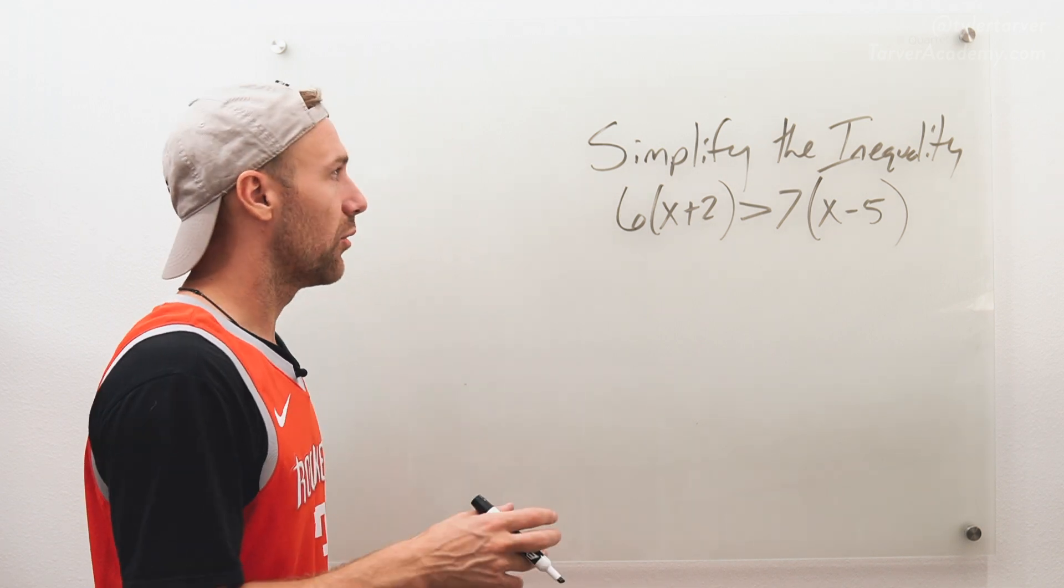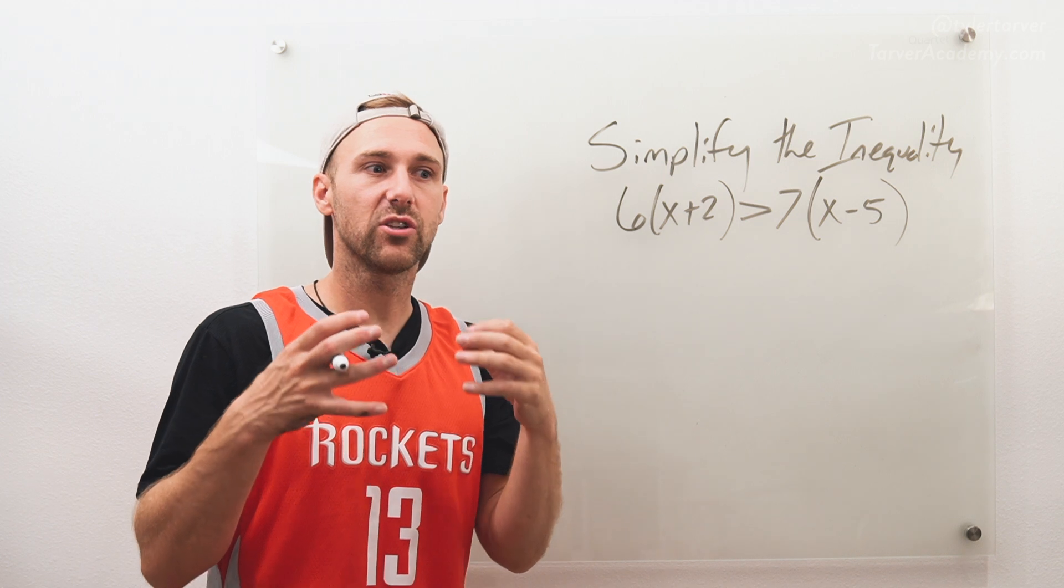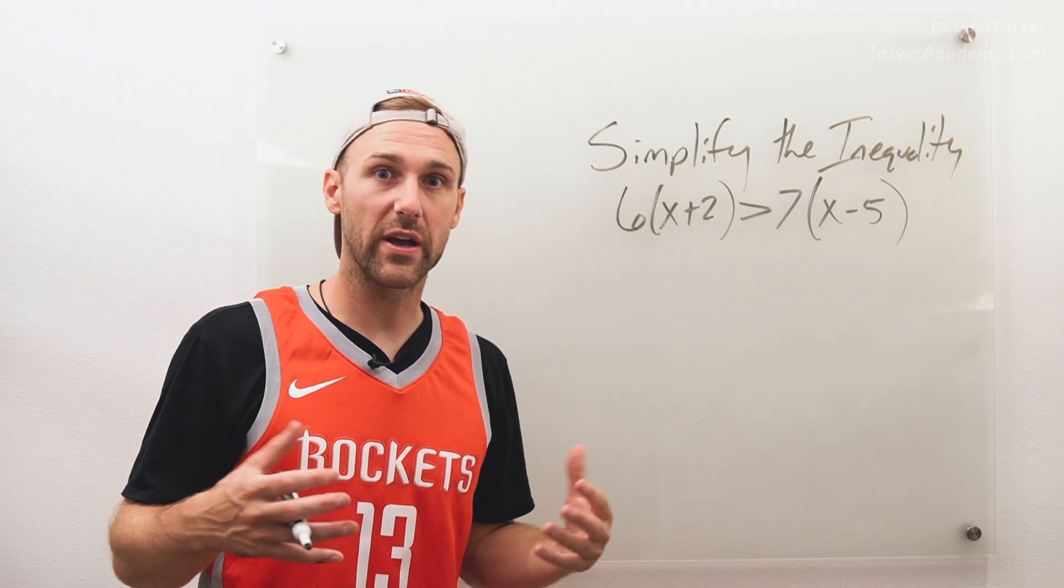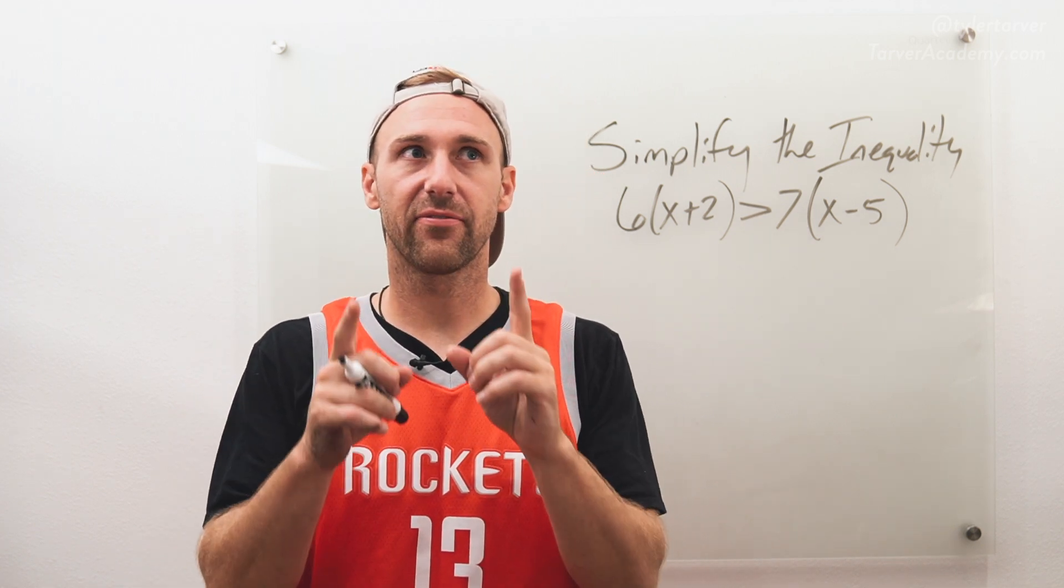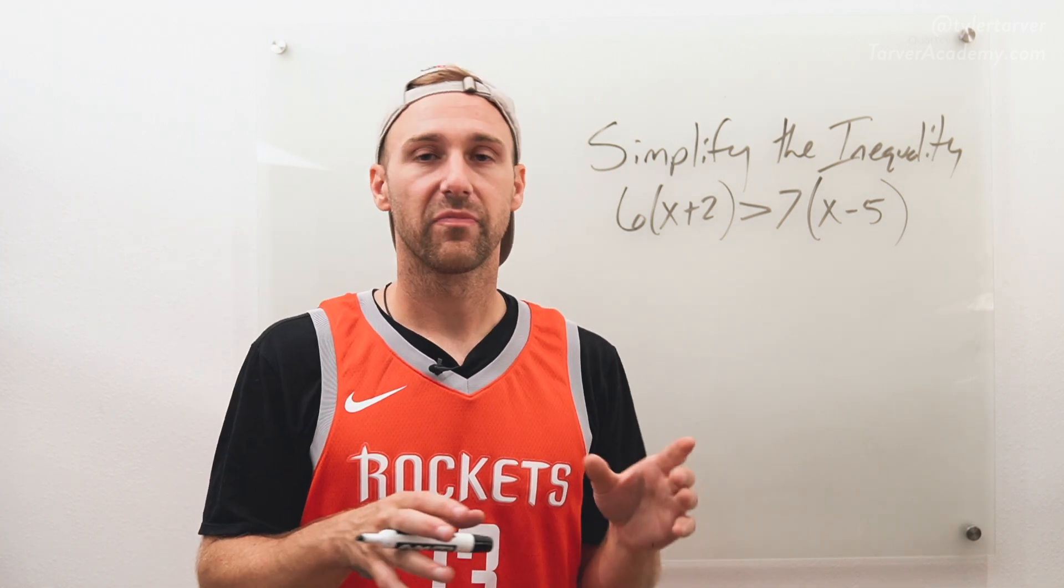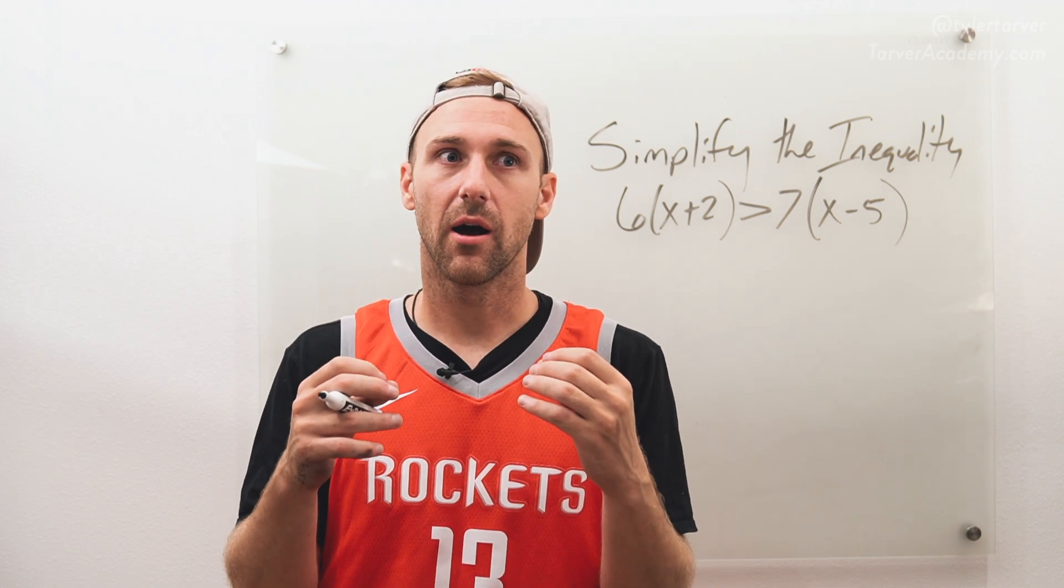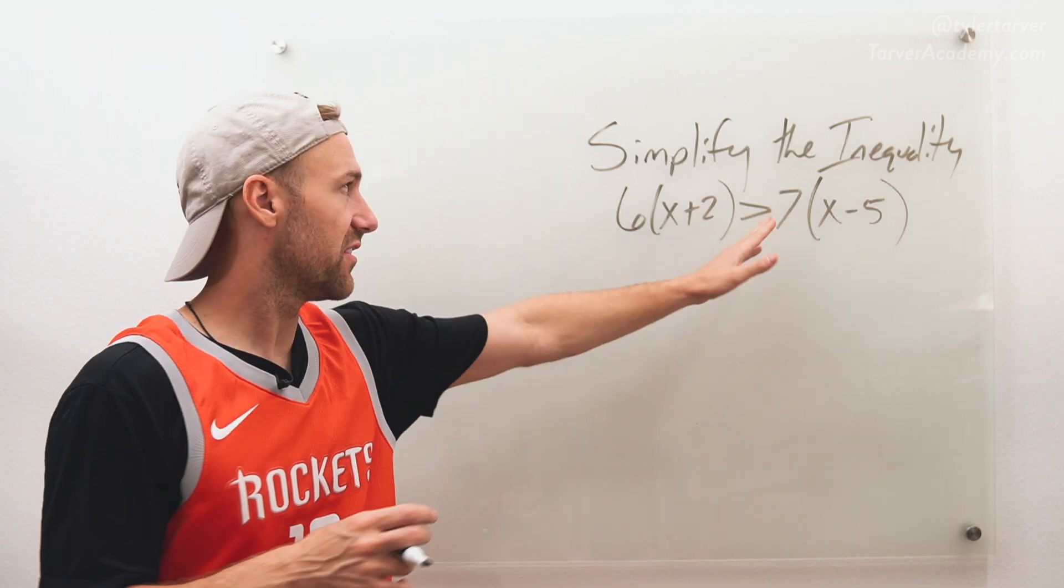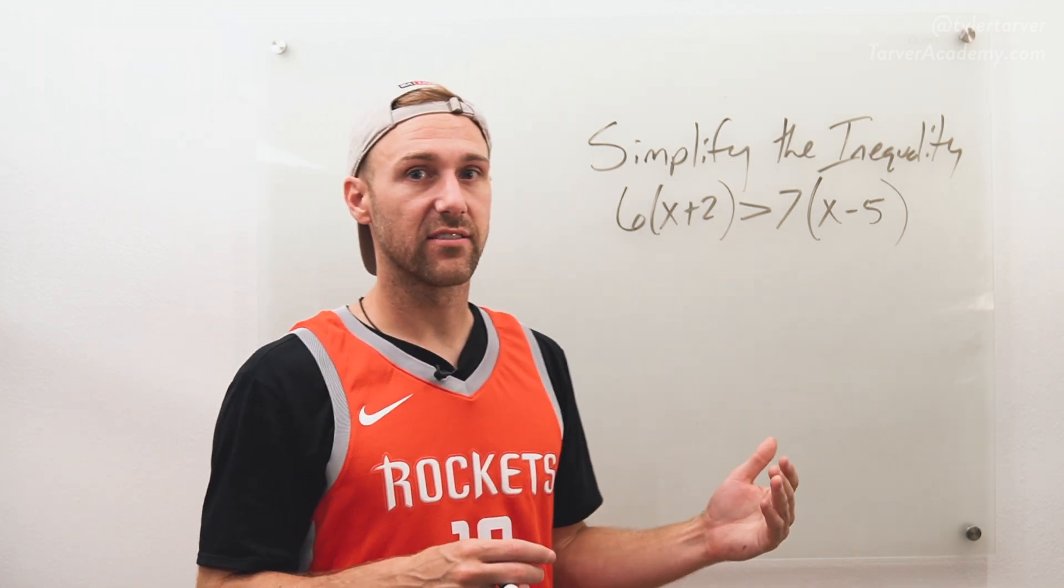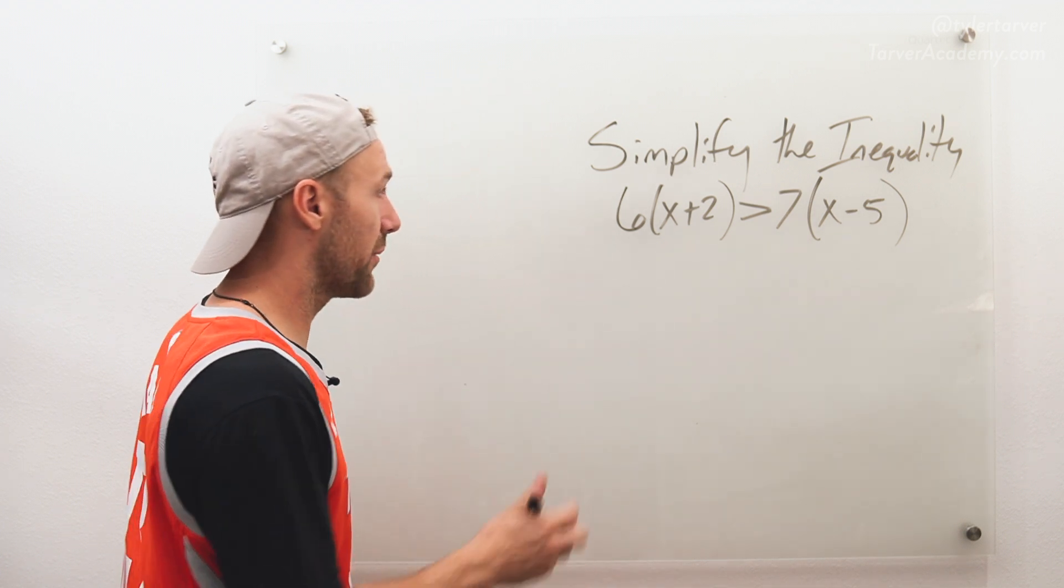Cool, okay. So whenever I am simplifying inequalities, I am going to be working them just like a regular equation that had an equal sign. The only time that it's different is if we have absolute values, which we don't - we have parentheses - or if I multiply or divide a negative across this. If I do that, then I have to switch the sign. So just be aware of that as you work this. Here we go.